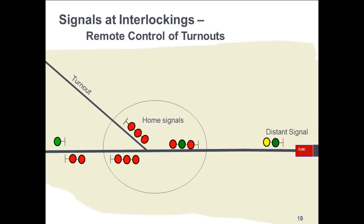Now let's talk about signals at interlockings. An interlocking is a stand-alone, dispatcher-controlled element. The dispatcher clears the route for his train from one interlocking to the next. While all moves are controlled and the dispatcher sets the route, understand that the dispatcher cannot change the aspect of any signal — the field logic will prevail. Automatic block signals are automatic, and for interlockings, all the dispatcher can do is request that the home signals be cleared. Home signals are normally at red or stop.